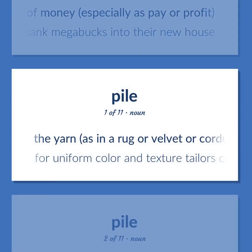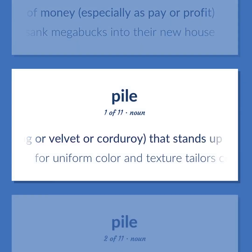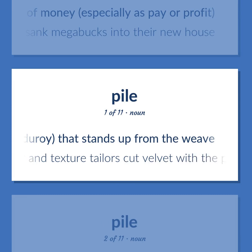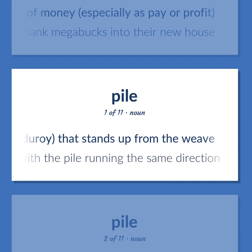Pile: the yarn, as in a rug or velvet or corduroy, that stands up from the weave. Example: For uniform color and texture, tailors cut velvet with the pile running the same direction.